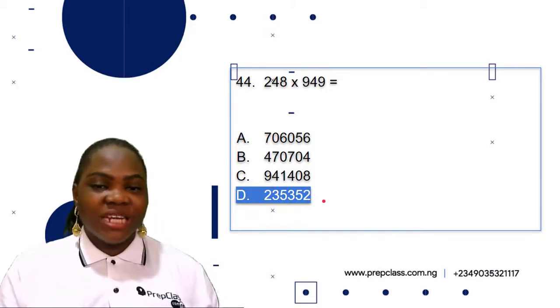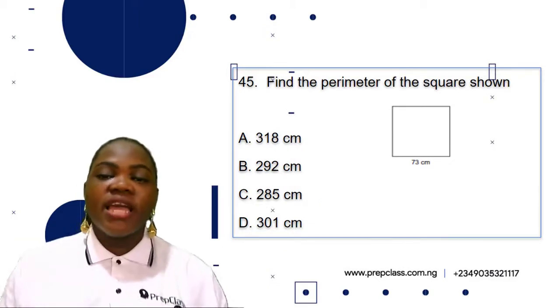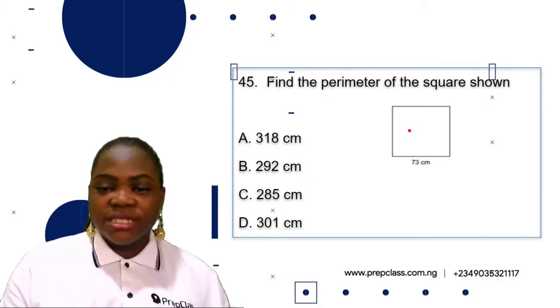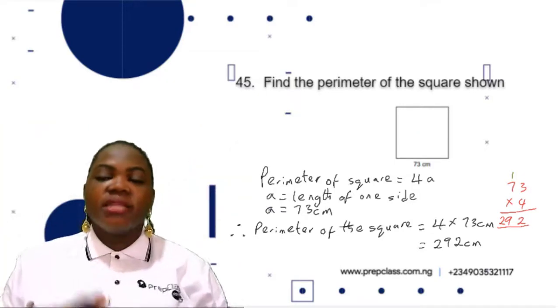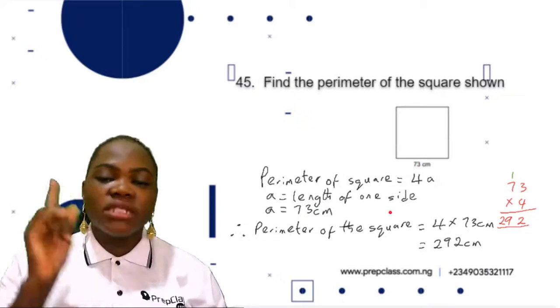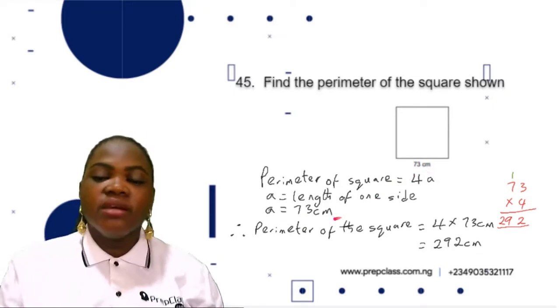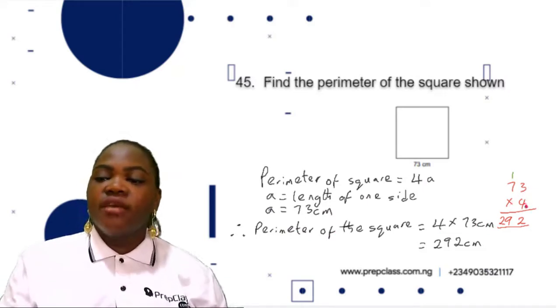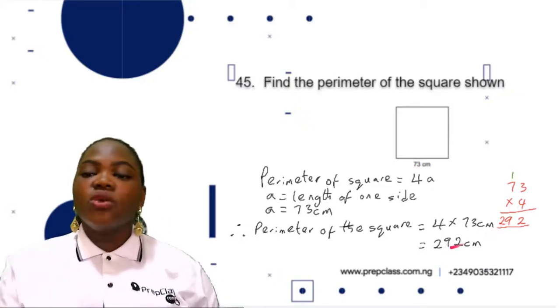Question 45: Find the perimeter of the square shown. What is perimeter? Perimeter is the distance around the shape. The perimeter of a square is given as 4a, where a is the length of one side. The length of one side is 73 centimeters, so the perimeter is 4 times 73 centimeters. 4 times 3 is 12, write 2 carry 1. 4 times 7 is 28, 28 plus 1 is 29. We have 292 centimeters. The perimeter of this square is 292 centimeters, which is option B.